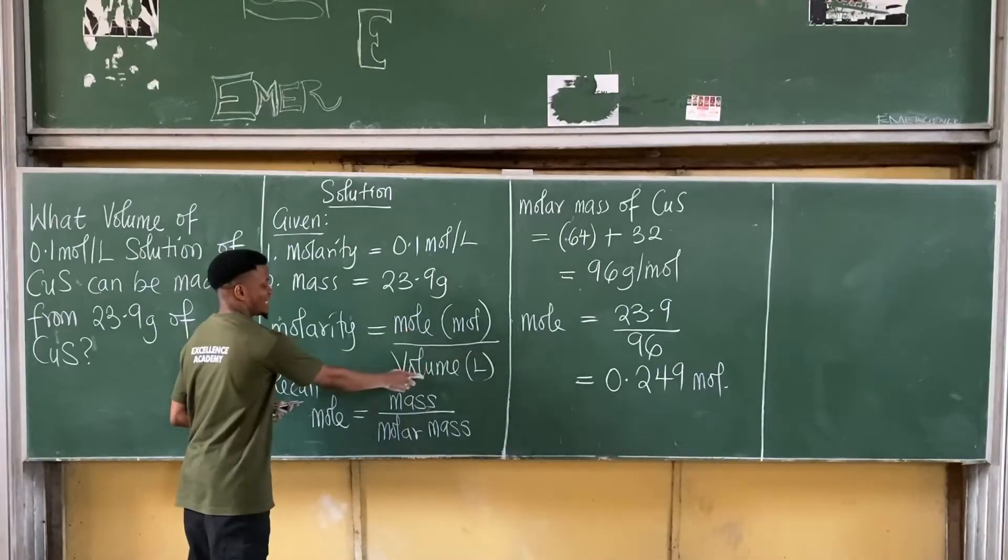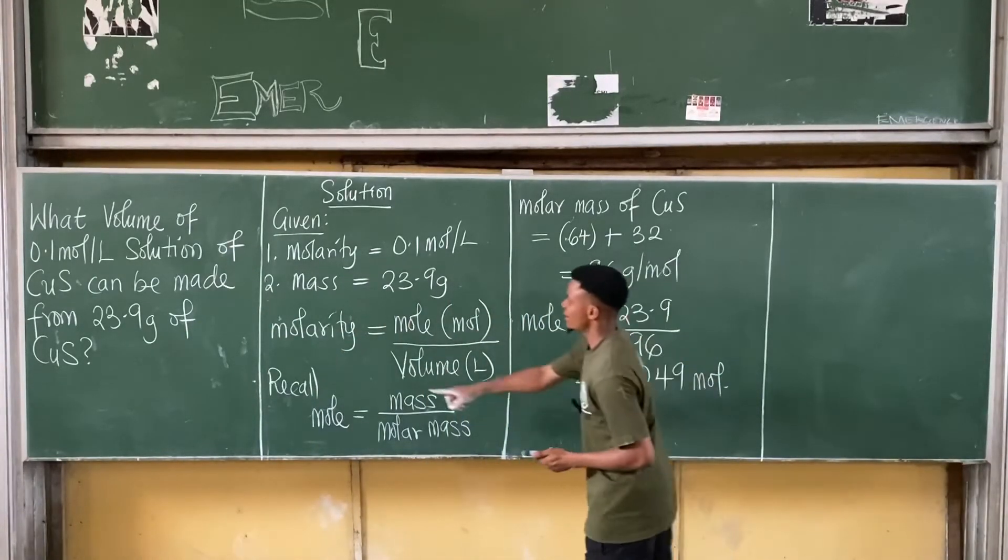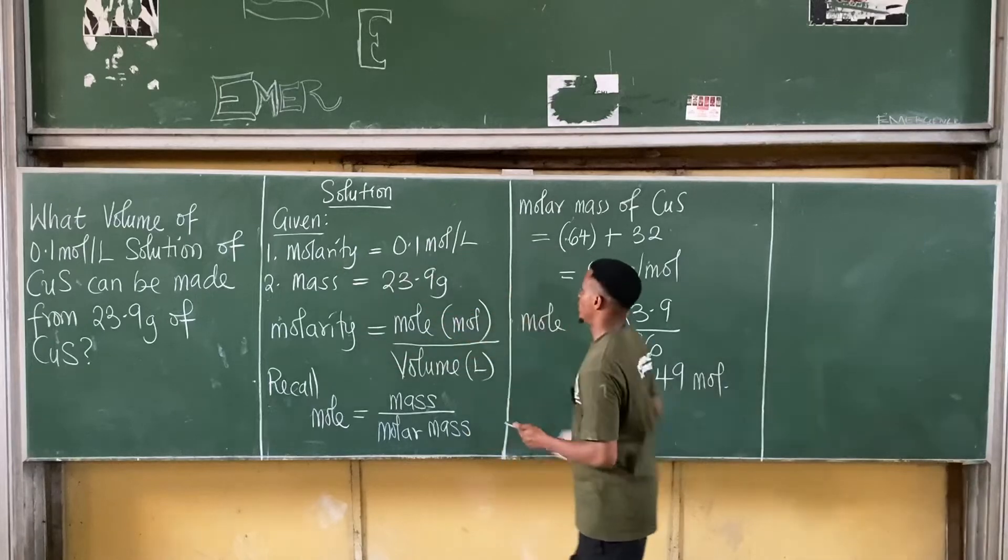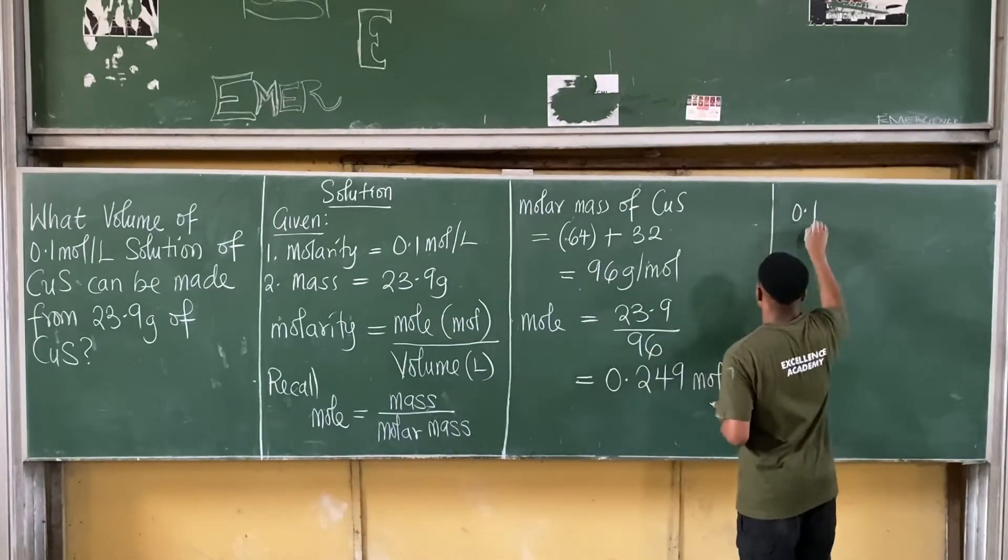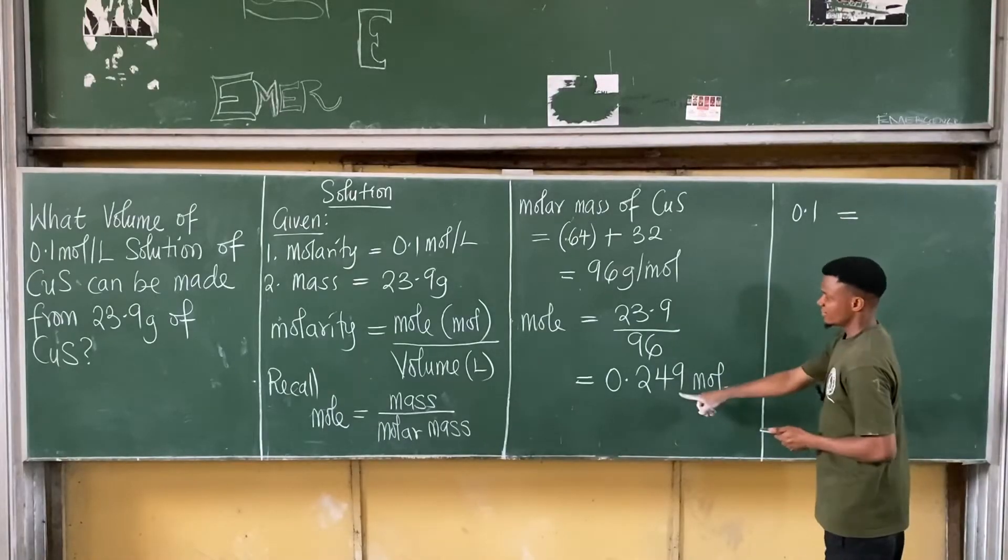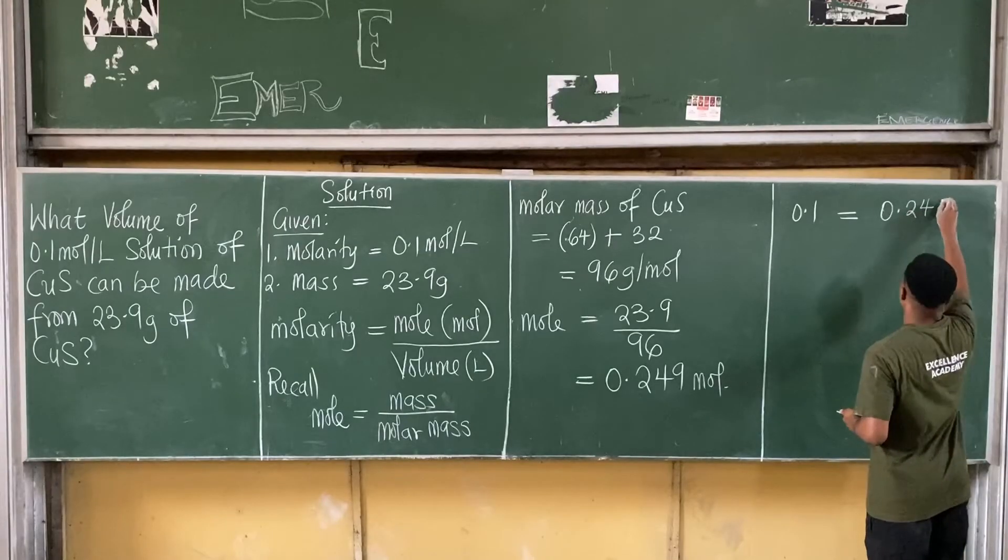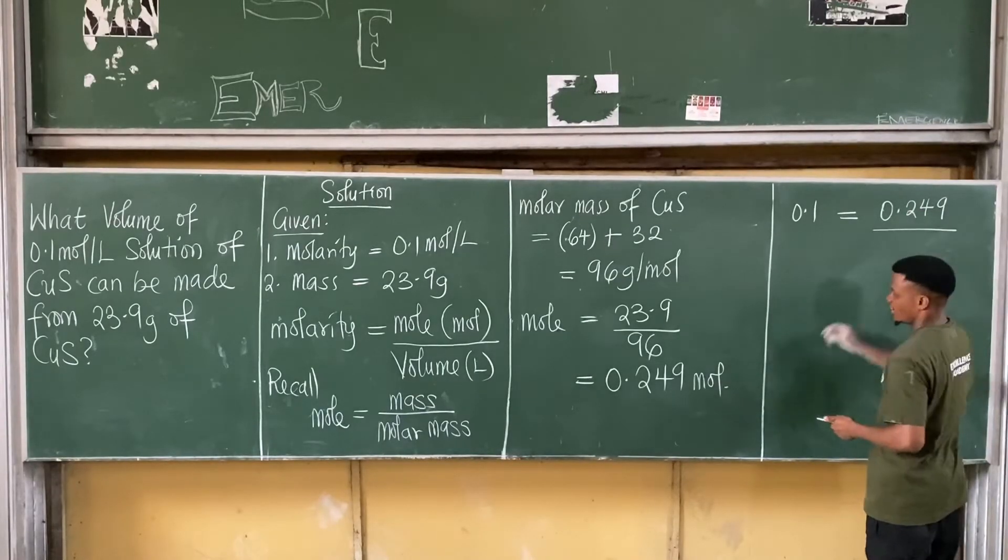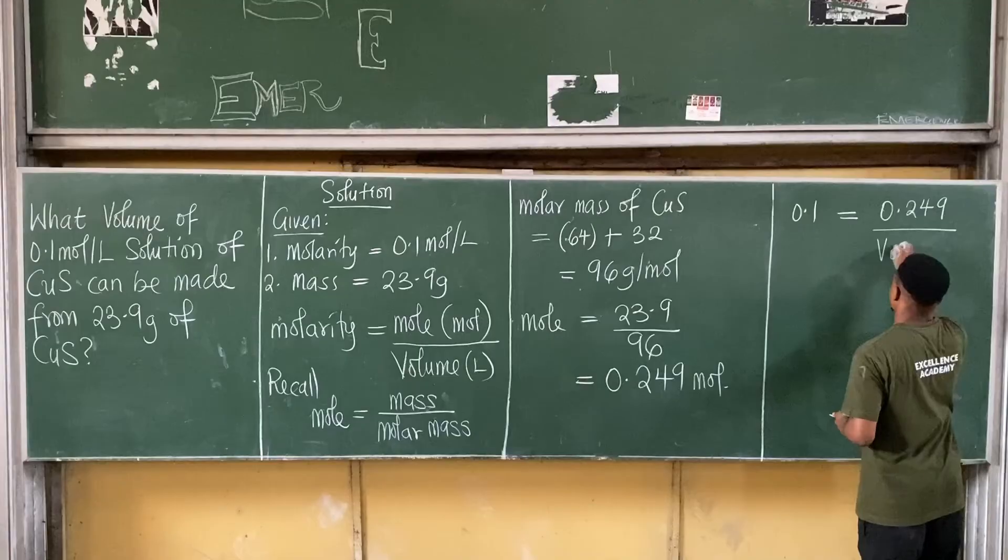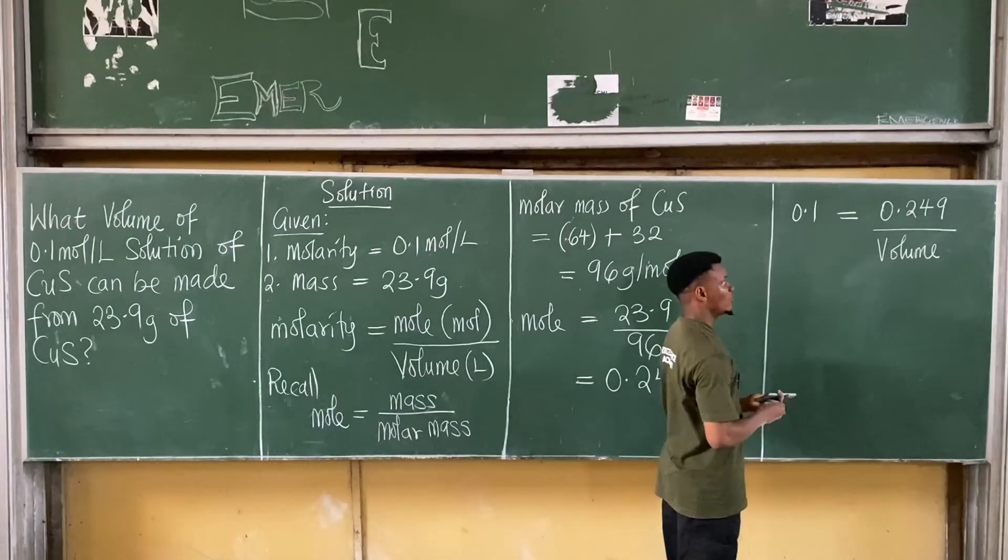If I've gotten the mole here, let's now find volume. So if you now substitute, we said molarity, which is 0.1. So 0.1, which represents molarity, is equal to mole. The mole here, as we found this, is 0.249 MOL. So it's all over volume. From here, we can now find volume. What do we do here? We cross multiply.